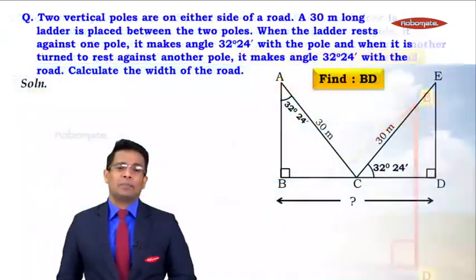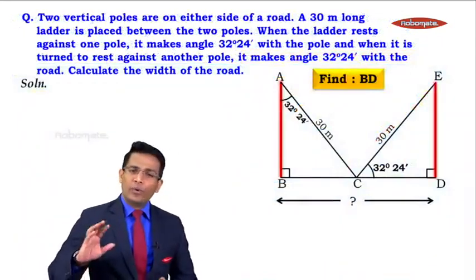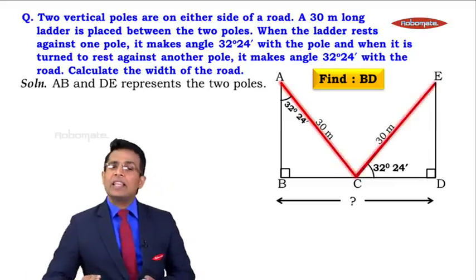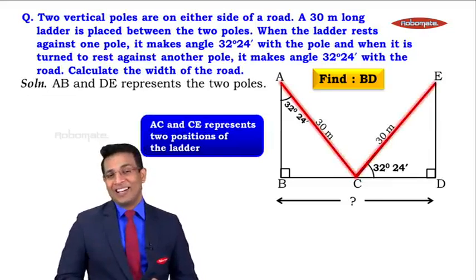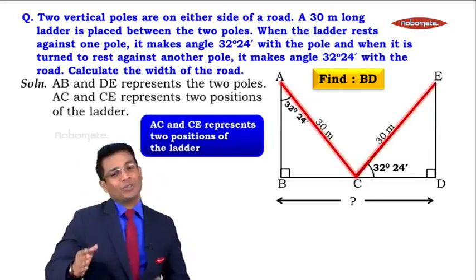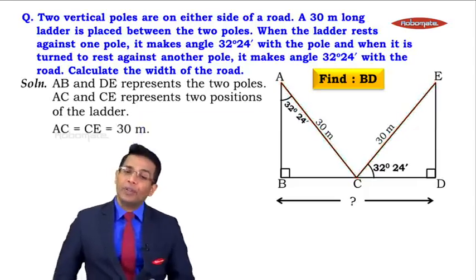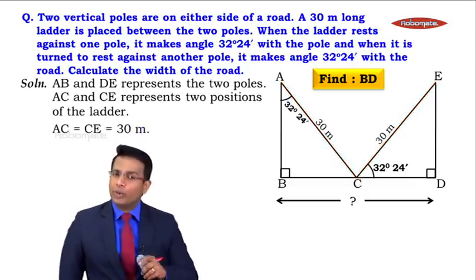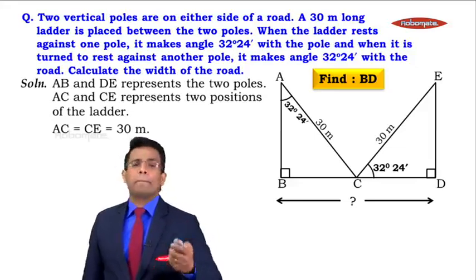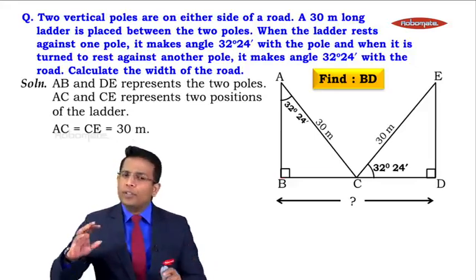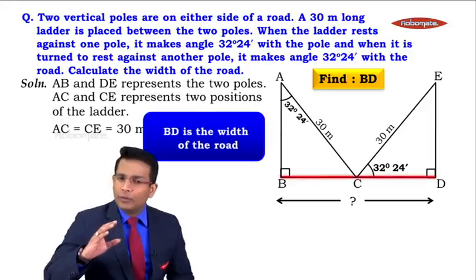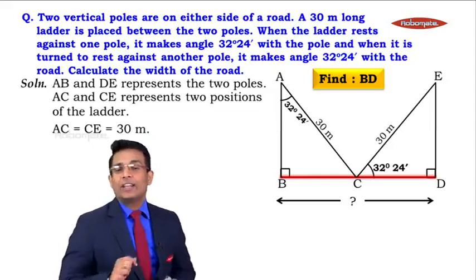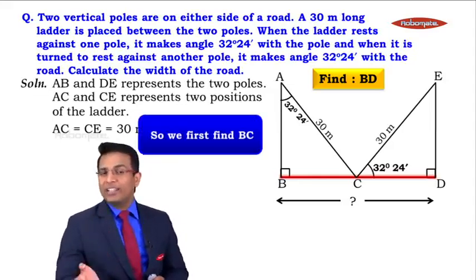AB and DE represent the two poles. AC and CE represent the two positions of the ladder. AC = CE = 30 meters. Angle BAC = 32 degrees 24 minutes, and angle ECD = 32 degrees 24 minutes. We need to find BD, which is the width of the road. BD is made up of two parts: BC and CD, so we need to find BC and CD separately.